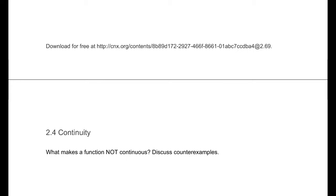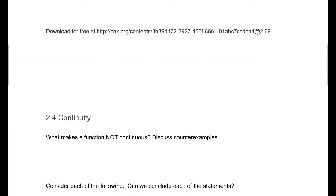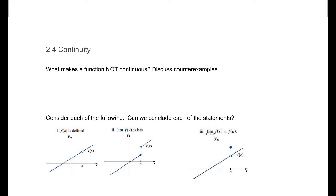Now that you've restarted and had a chance to think about that, what sort of things did you come up with? I have three examples here of functions that are not continuous, and some statements that go along with those. Possibly one of the examples you came up with was something that has a hole in it — a function where we have a hole, where the function is not defined. Another example is one that has an obvious break in it at some point. And then there's the case where you have a hole and something like that.